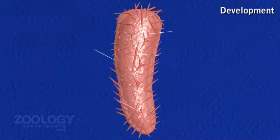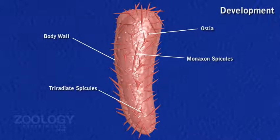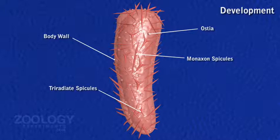The parenchymyla swims freely for some hours, then becomes fixed by its anterior pole and develops into a flat plate with an irregular outline. Most of the amoeboid cells migrate to the external surface, passing between the flagellated cells.